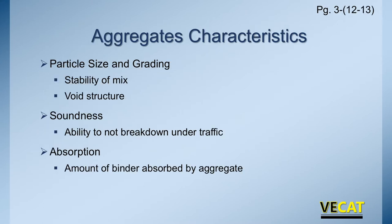For aggregates, we look at size and grading because that impacts how stable the mix is and what the void structure will be — do the rocks interlock to make it stable while minimizing but not eliminating voids? We're also worried about soundness. We do the LA Abrasion test to make sure that as the rock is exposed to traffic, it doesn't crack or disintegrate. We look at absorption — how much binder is absorbed into that aggregate. If it has a lot of absorption, you may design a mix with 6% asphalt, but if half a percent gets absorbed, you really only have an effective 5.5%. For that mix to perform, you may have to run 6.2 or 6.3, accounting for the absorption.